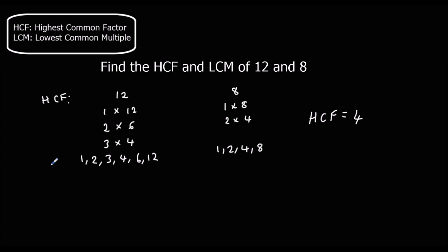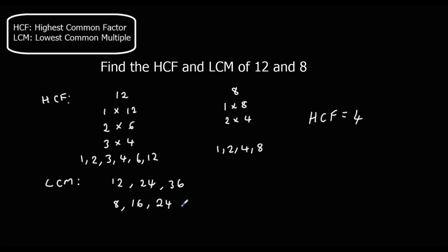The lowest common multiple is the lowest number in both of their times tables. So the 12 times table goes 12, 24, 36, and so on. The 8 times table goes 8, 16, 24, 32, and so on. So the lowest number in both of the times tables is 24. So the lowest common multiple is 24.